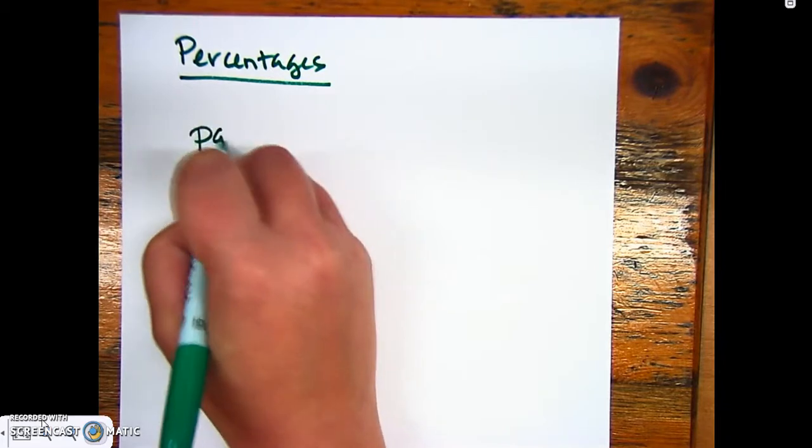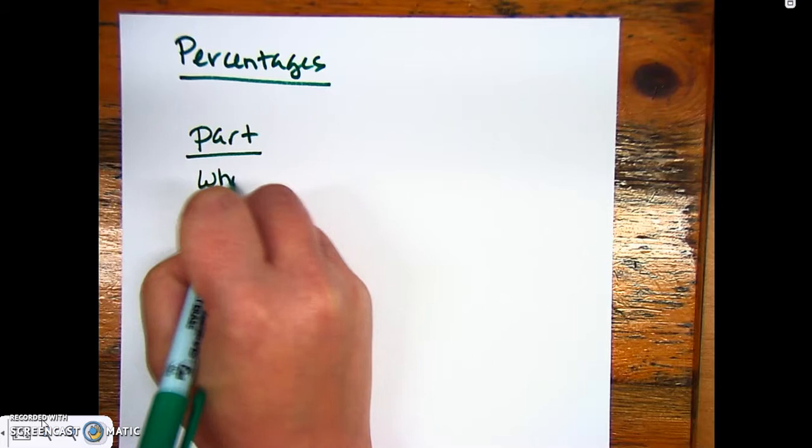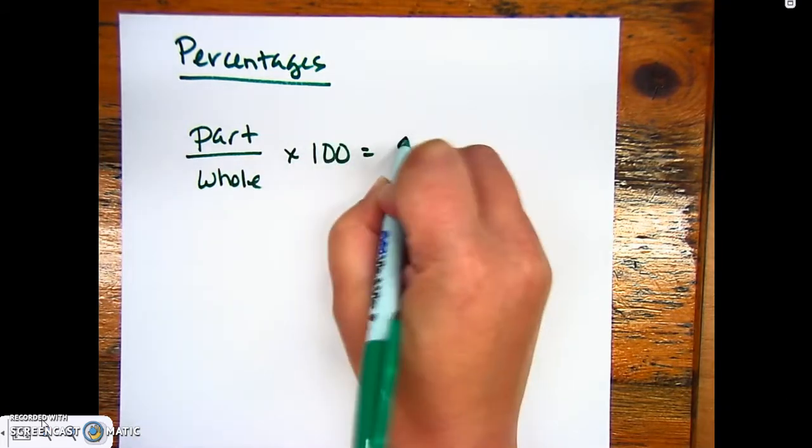To calculate a percentage, we take the part and divide by the whole, multiply by 100, and that gives you a percent.